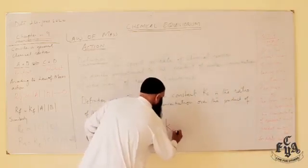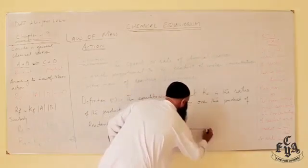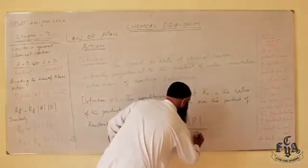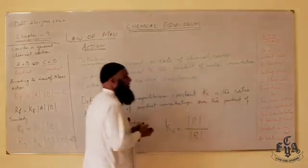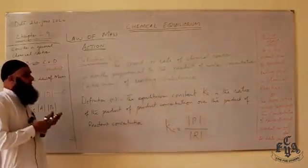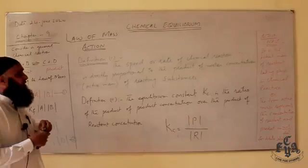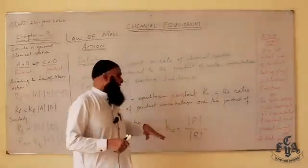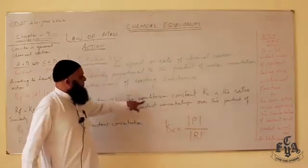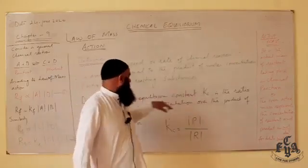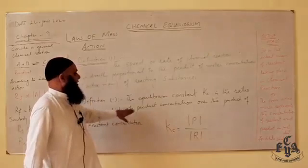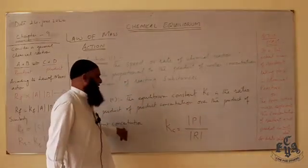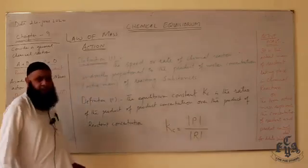Kc is equal to the concentration of products over the concentration of reactants. If we have two or more products or two or more reactants, then we take the product of their concentrations. The equilibrium constant Kc is the ratio of the product of product concentrations over the product of reactant concentrations.